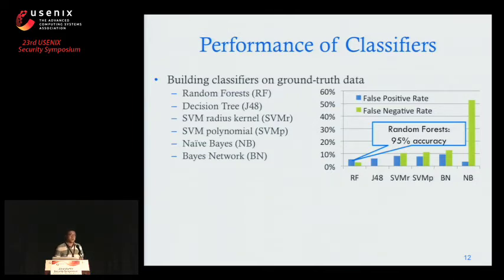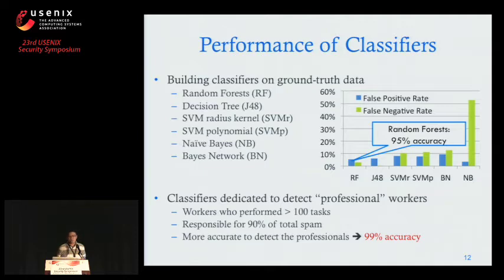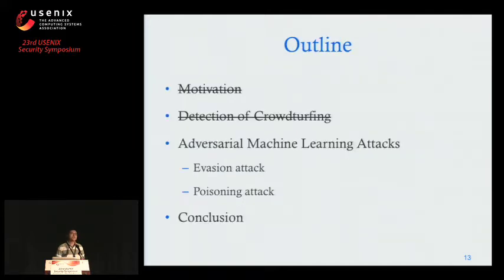We used these 35 features to build different classifiers using different learning algorithms. We found that random forest is the most accurate with 95% accuracy. J48 decision tree is also accurate, followed by SVMs. We also built a more dedicated classifier to detect professional workers — those who frequently perform tasks — and these classifiers achieve 99% accuracy. Professional workers are responsible for 90% of the total spam generated, so shutting them down addresses most of the problem. This shows it is possible to build accurate classifiers to detect worker accounts.